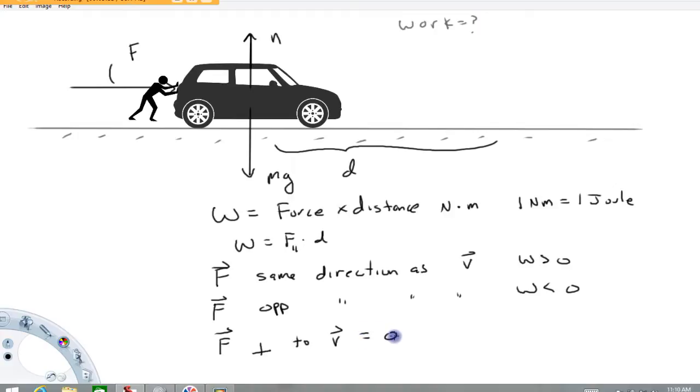Alright, so this is how work is calculated. I'm going to save why we calculate it for another video. This is just meant to be a basic introduction to work. Again, it's force times distance, but the force has to be parallel to the distance. The work is positive when the force is in the same direction as the velocity, negative when the force is in the opposite direction of the velocity, and zero when the force is perpendicular to the velocity.